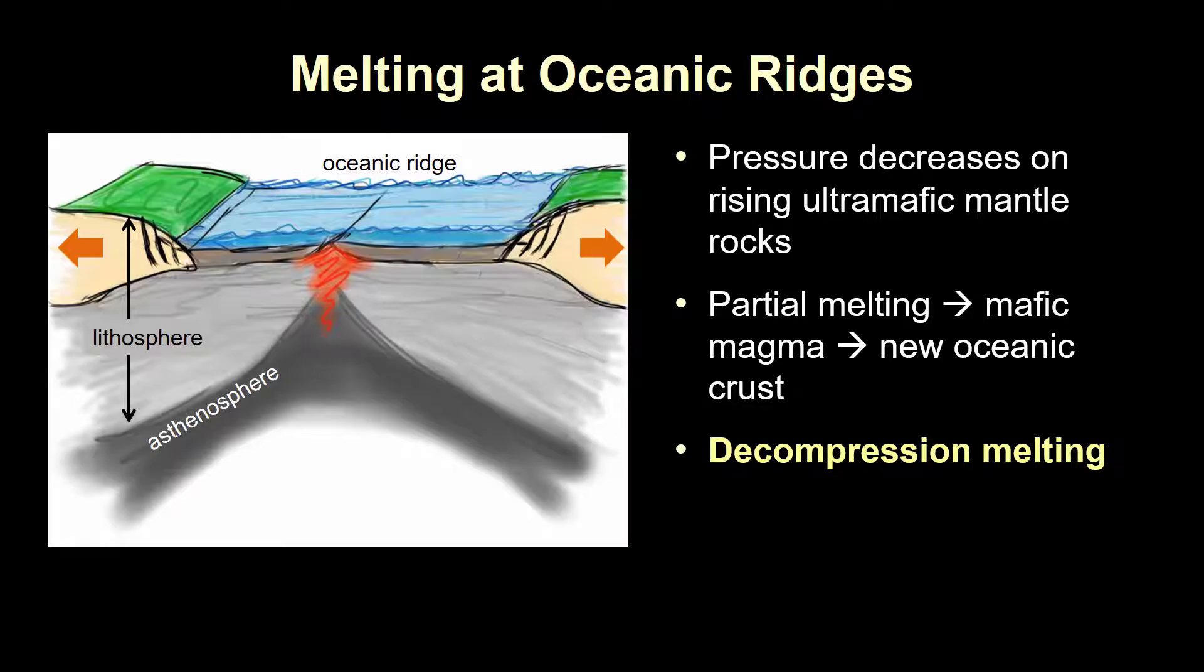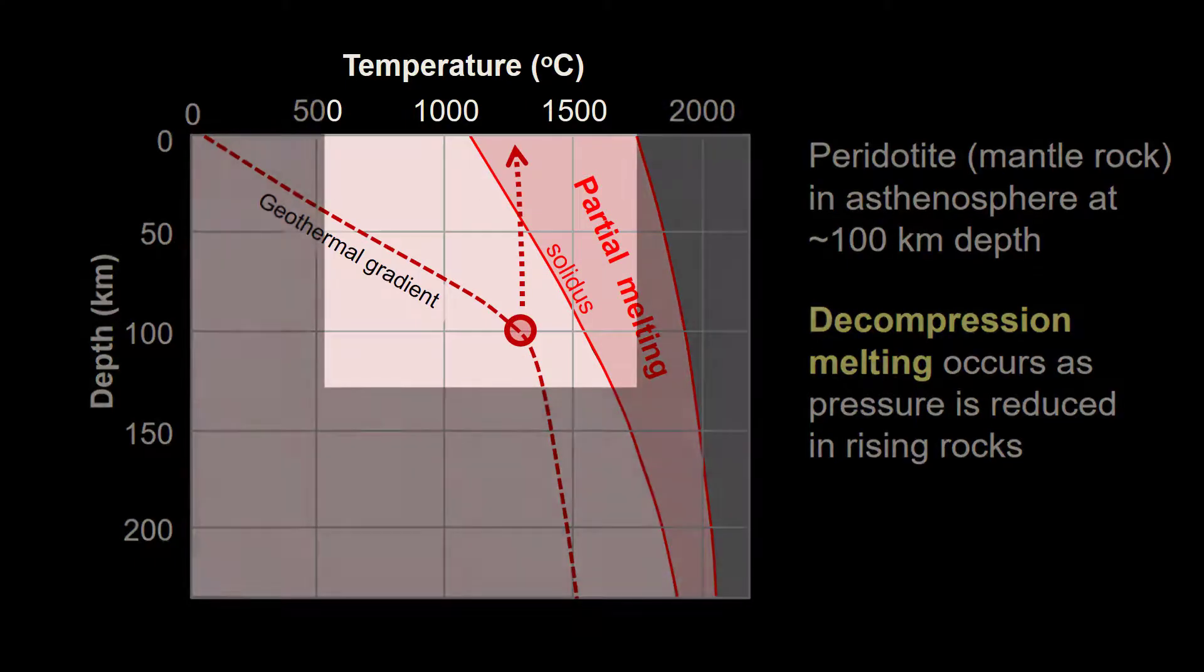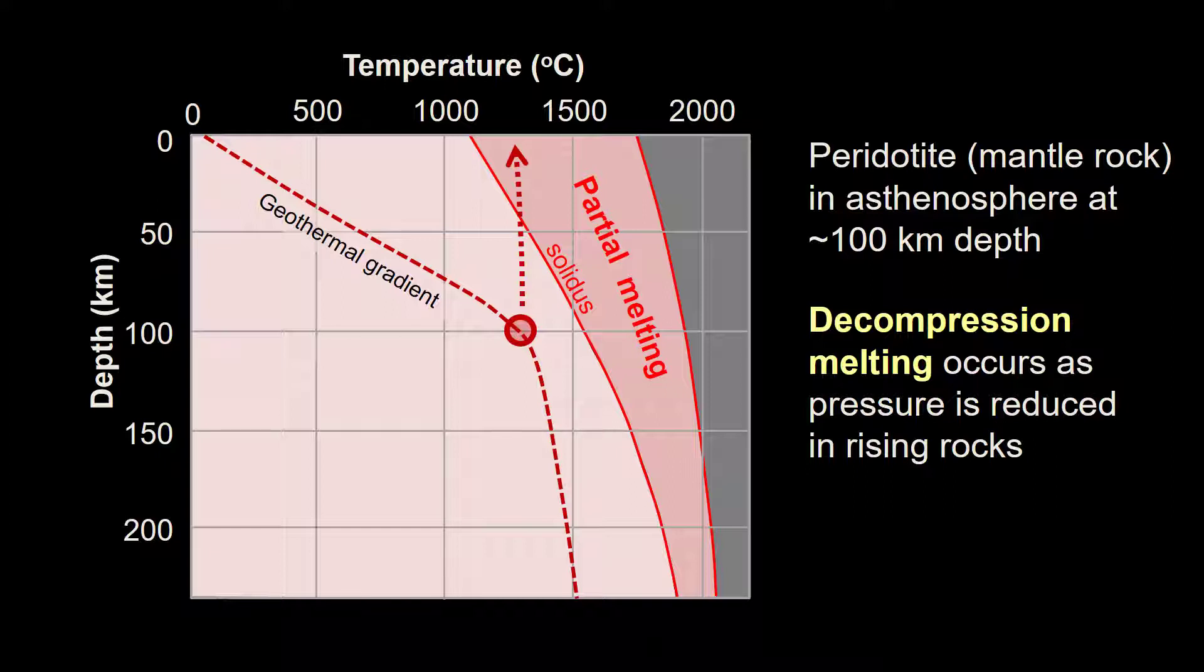Let's see what this looks like on our graph. Imagine if the hottest asthenosphere was to move upward fast enough so that it doesn't lose much of its initial heat. Somewhere above 50 kilometers, it would cross the peridotite solidus line, and partial melting would begin to generate a mafic magma. As rising continued, a greater proportion of the original rock would undergo melting, but it would never be sufficient to completely melt the peridotite.